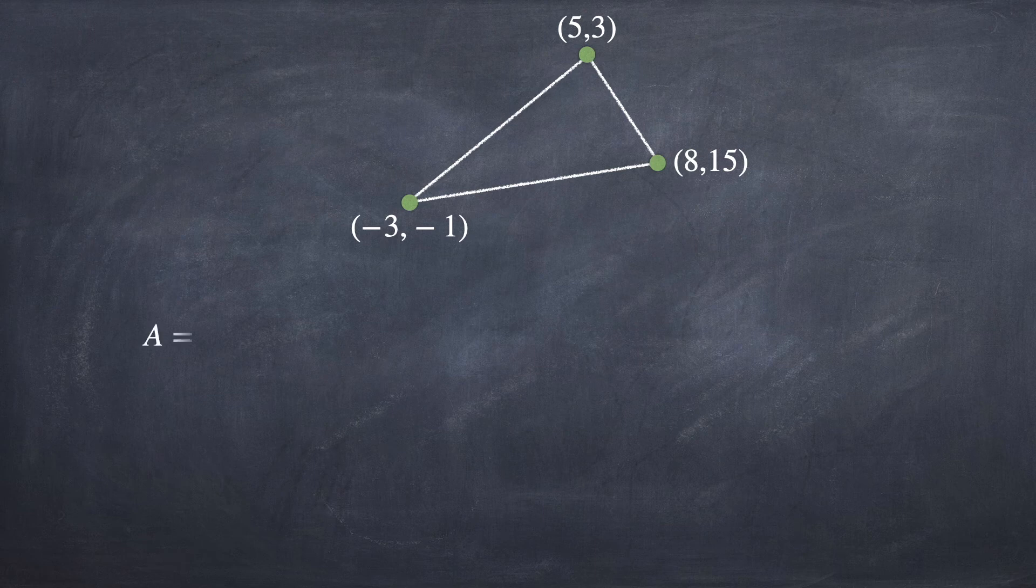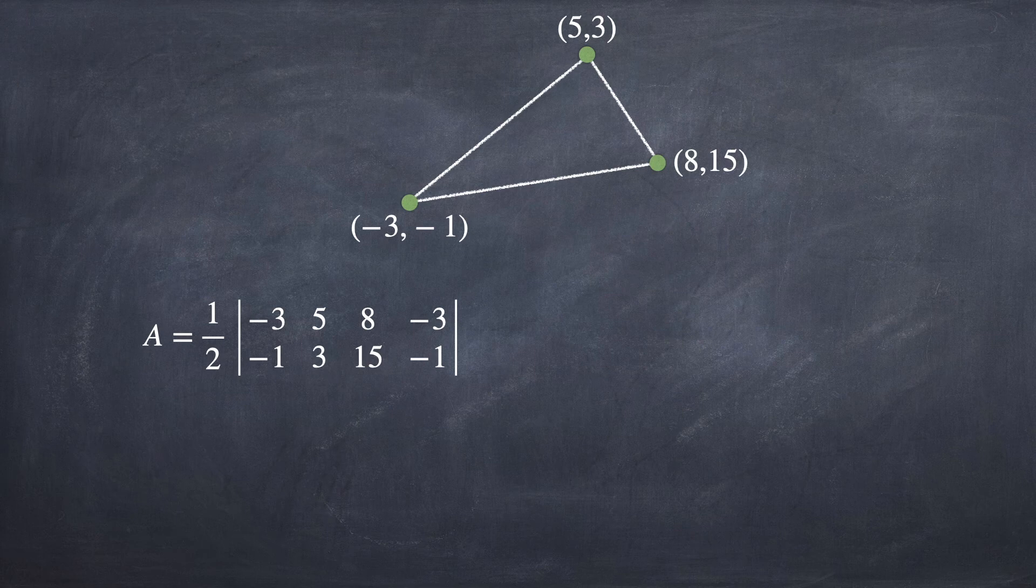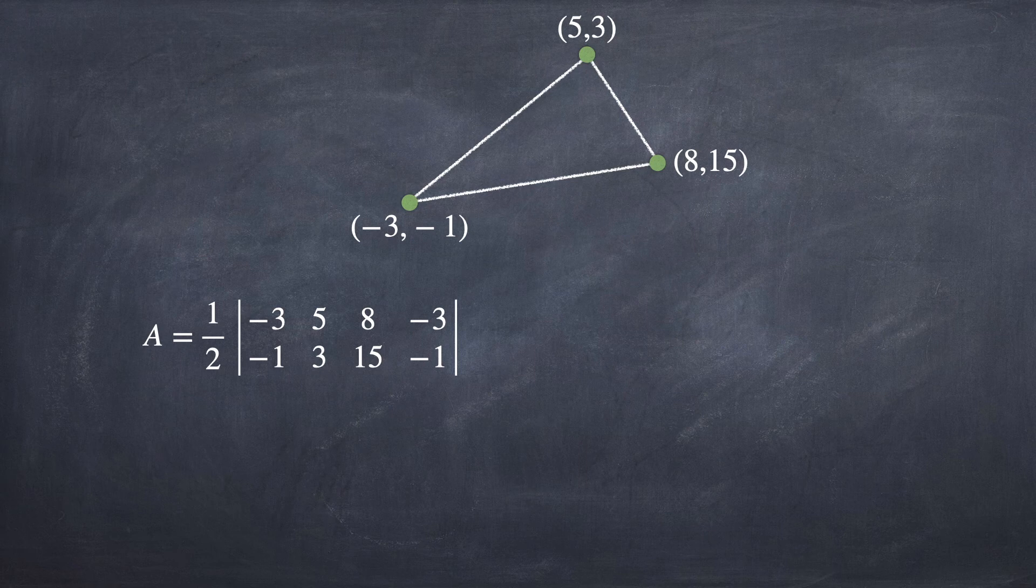Starting with (-3, -1) and going clockwise, we write down the first, second, and third point into the formula. Don't forget to write down the first point at the end.